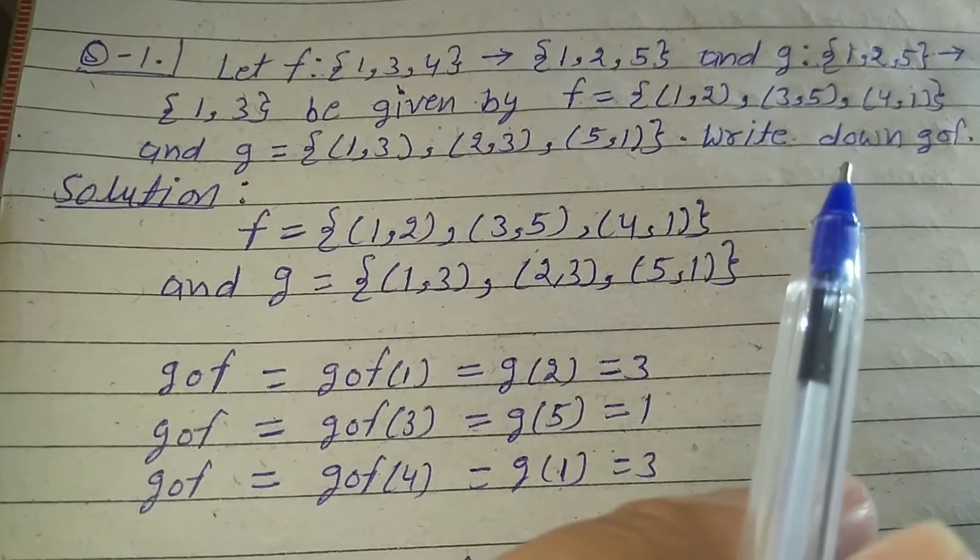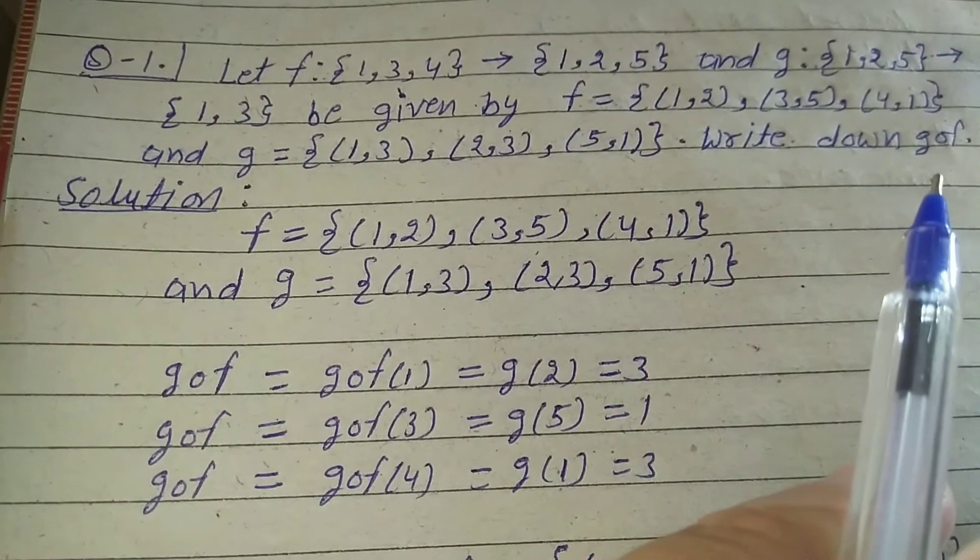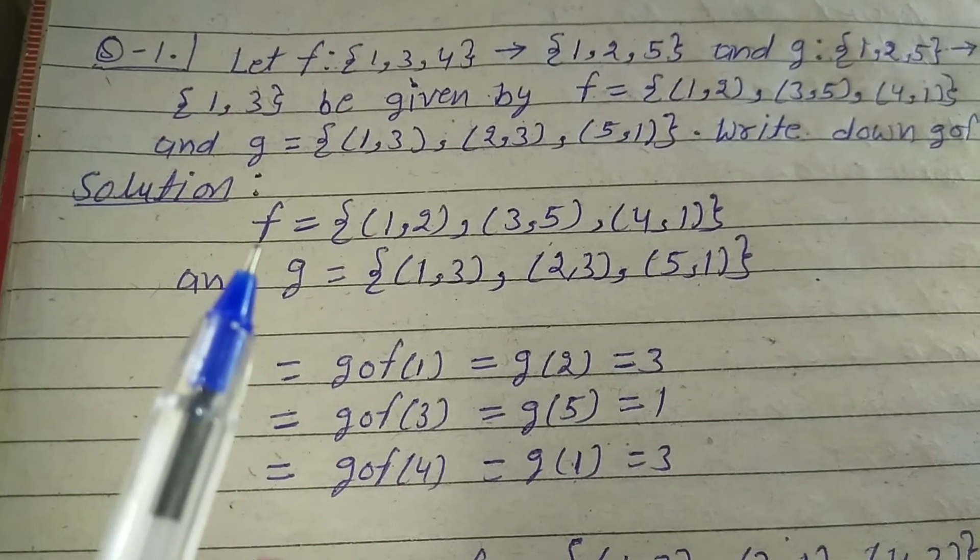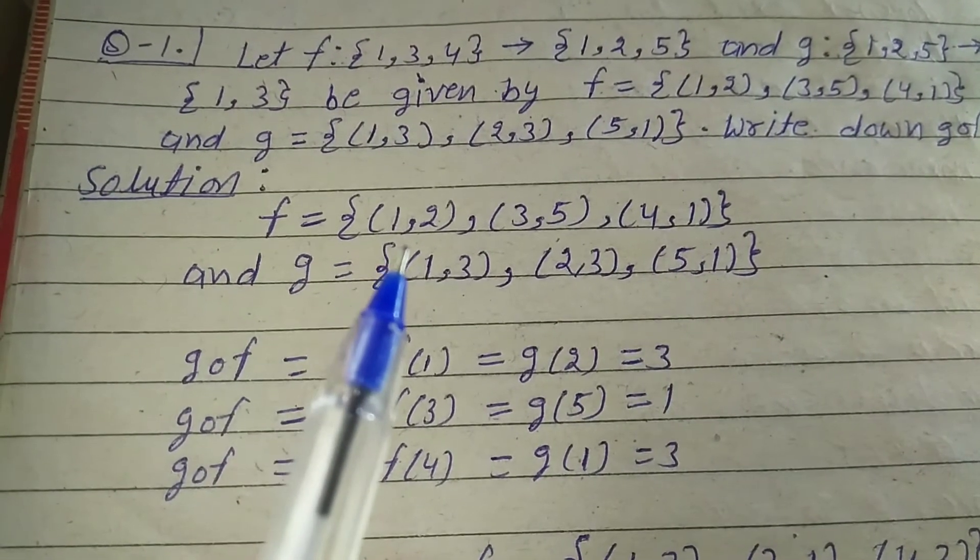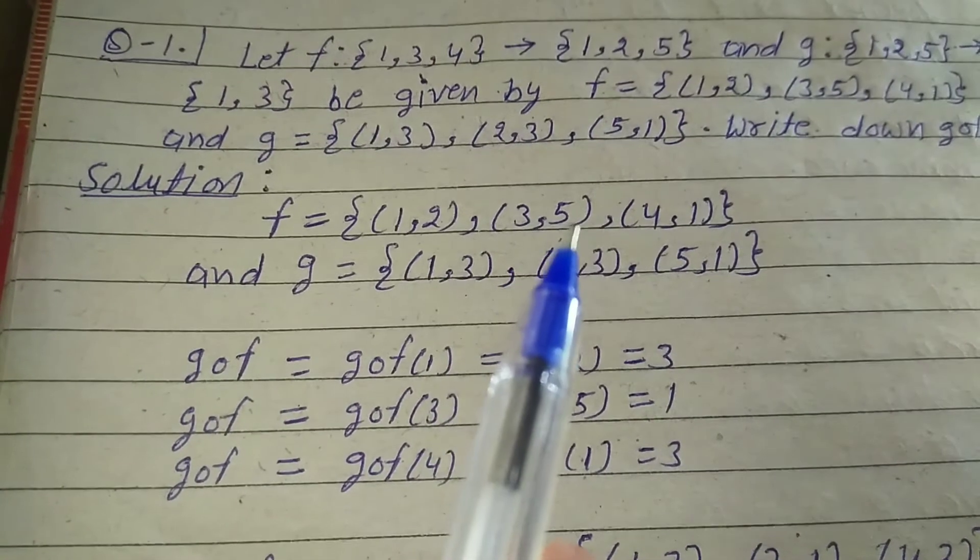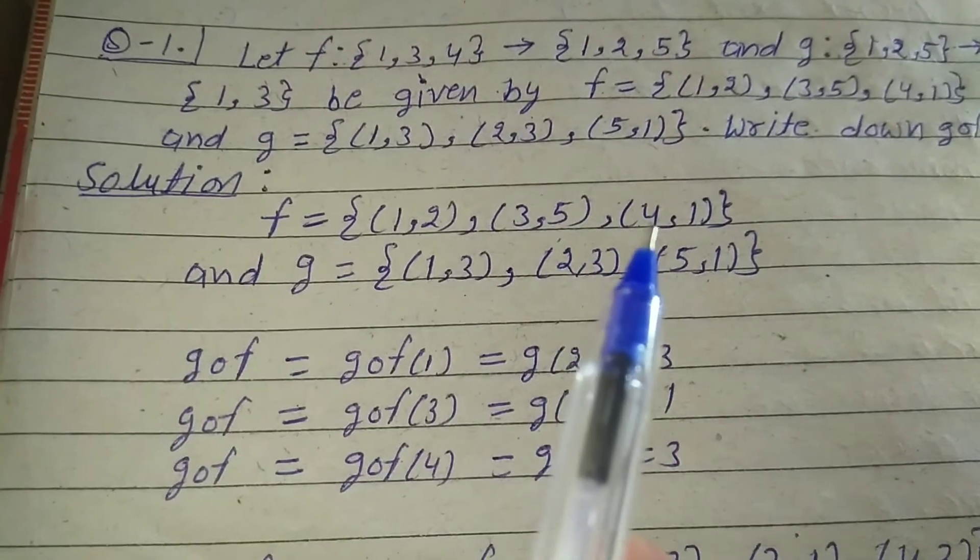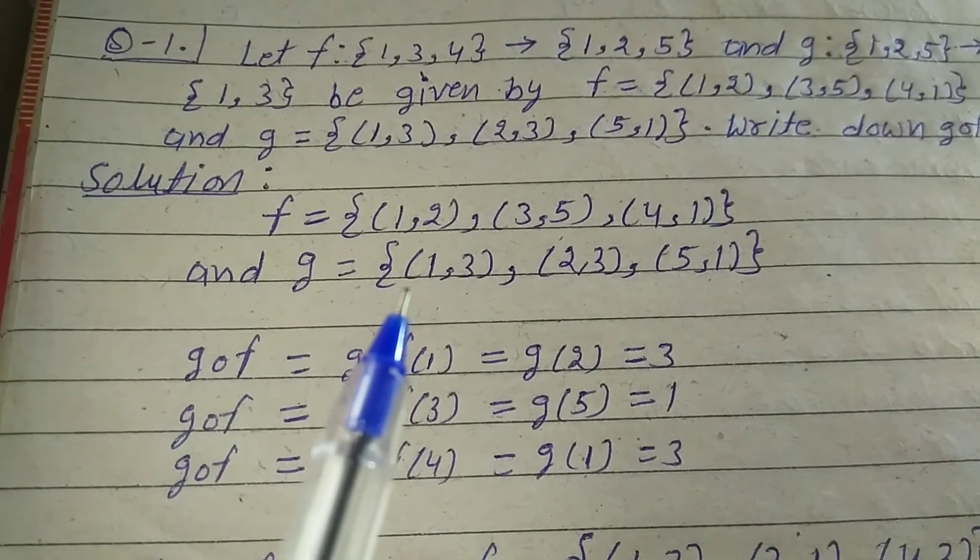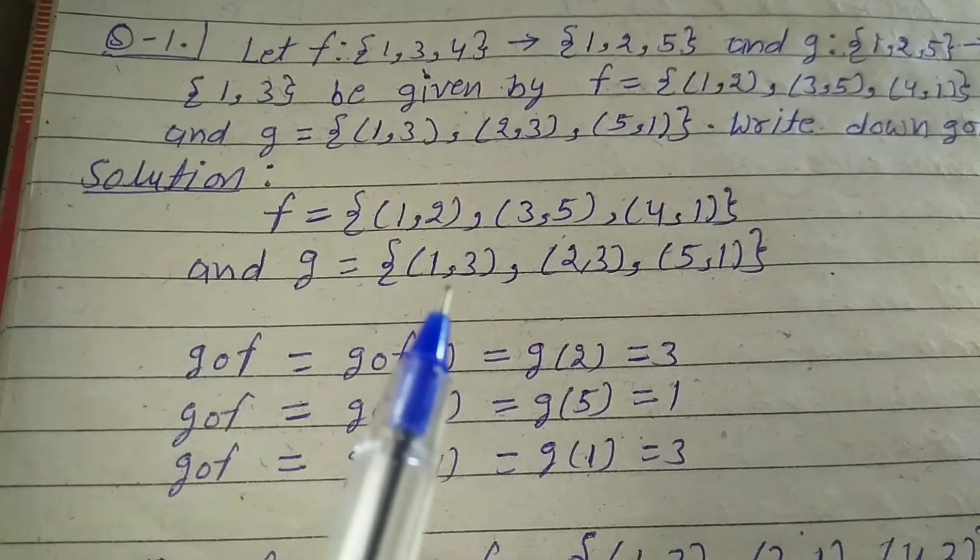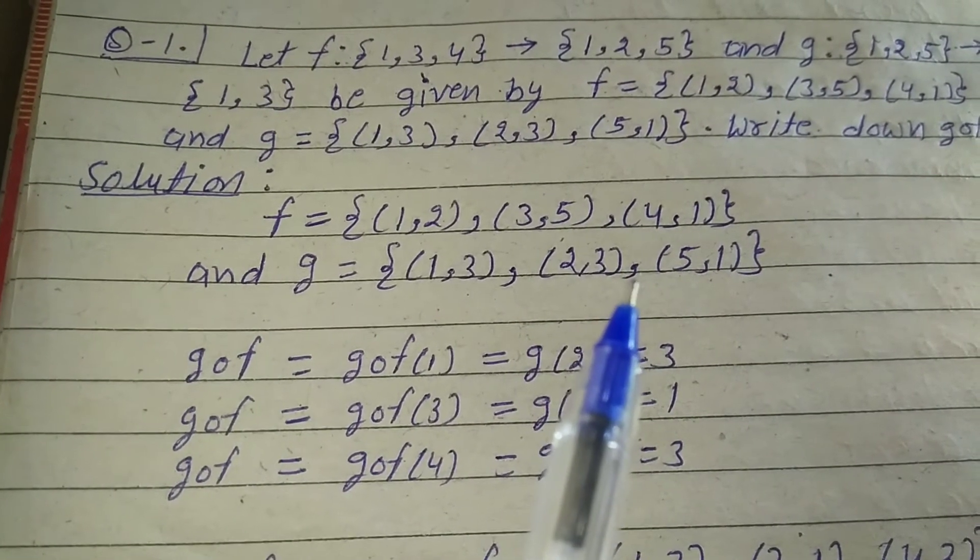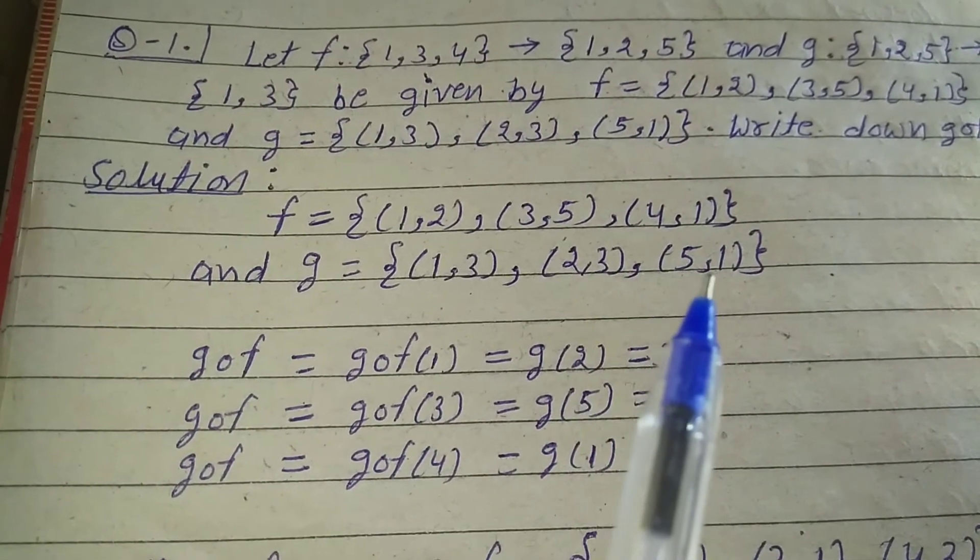Solution: F = {(1,2), (3,5), (4,1)} and G = {(1,3), (2,3), (5,1)}.